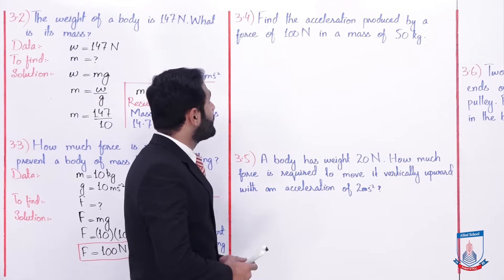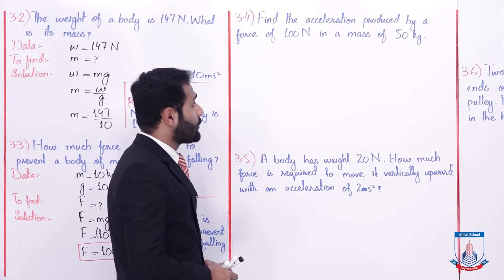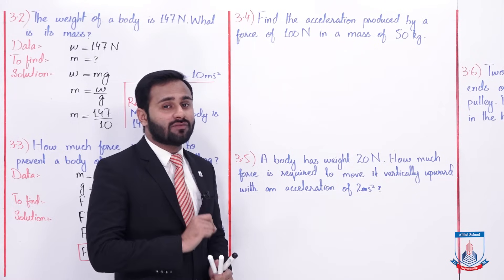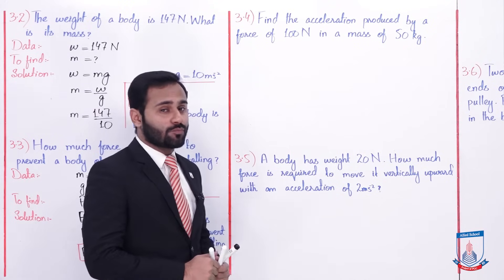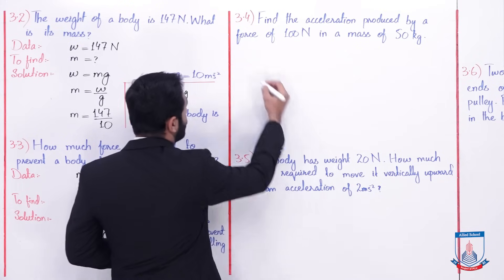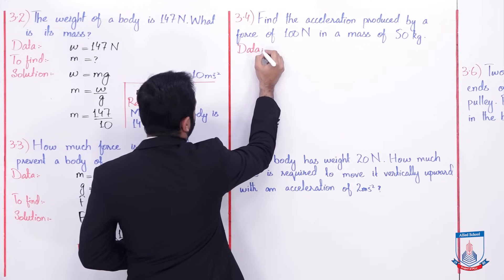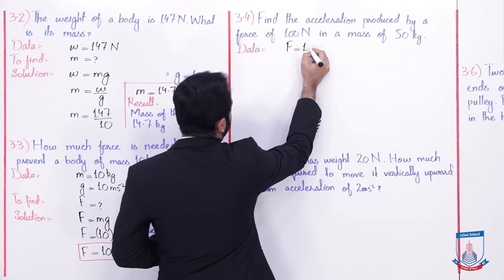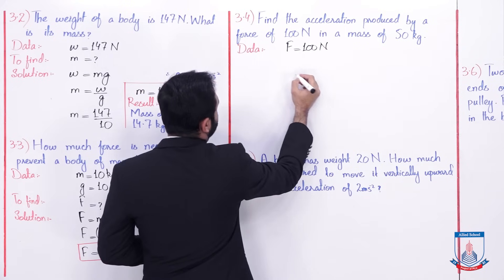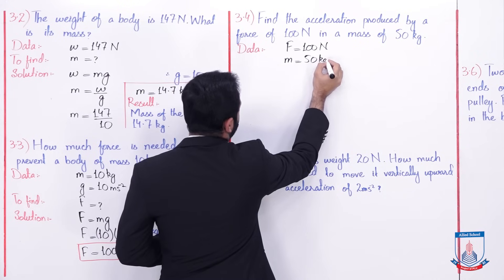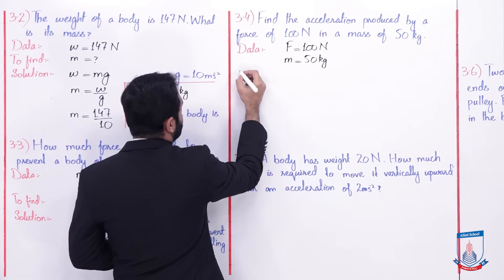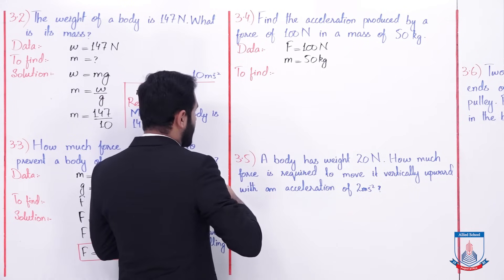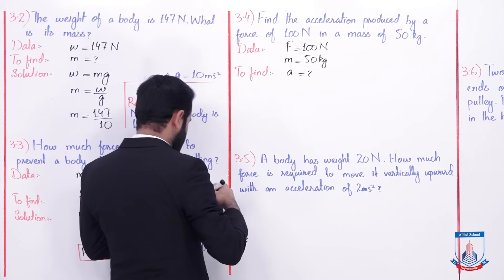Now the numerical 3.4 — find the acceleration produced by a force of 100 newton in a mass of 50 kilogram. Ab ek force 100 newton ki hai aur us body ka mass 50 kilogram hai, to us body mein kitna acceleration produce hoga — yeh aapne find out karna hai. Data note down karte hain: force given hai 100 newton, mass given hai 50 kilogram, and what you have to find is acceleration a — a is equals to question mark.